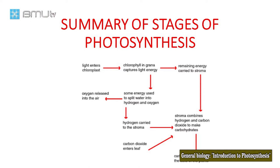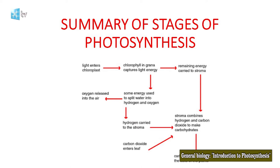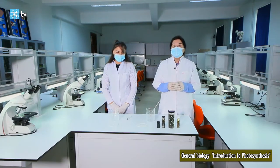The Calvin cycle occurs in another part of the chloroplast called the stroma. Carbon dioxide is taken from the air, enters the envelope of the chloroplast, and enters the stroma. Here, carbon dioxide combines with special molecules called ribulose bisphosphate, or RuBP.